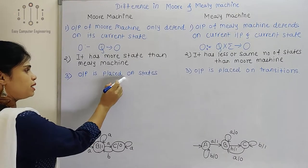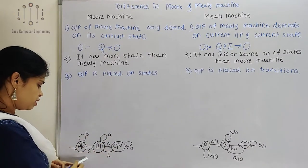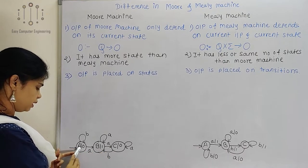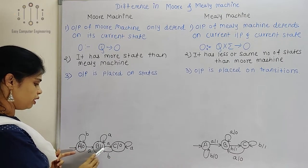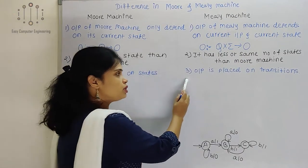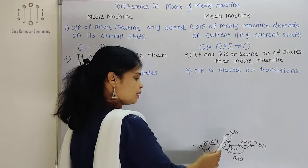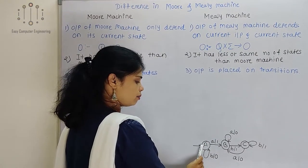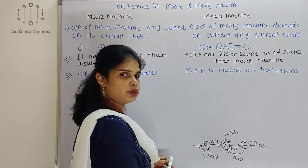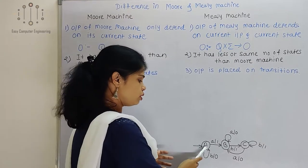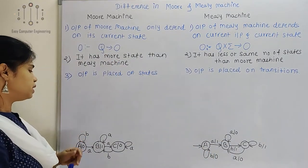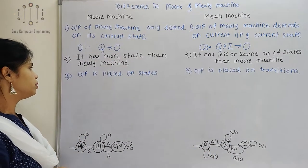This is the third difference. In Moore machine, output is placed on states. In this example, state A has output 0, B has output 1, and C has output 0. But in Mealy machine, output is placed on transitions. From state A on input B, output is 0 — like that. So in Mealy machine the transition has the output, whereas in Moore machine the state has the output.